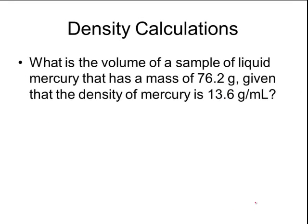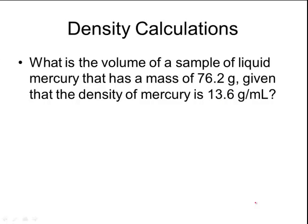Last example. What is the volume of a sample of liquid mercury that has a mass of 76.2 grams, given that the density of mercury is 13.6 grams per milliliter? Notice a little bit different unit on my density, but we'll still solve it the exact same way. So the information pulled out of the problem, mass is 76.2 grams. The density of mercury is 13.6 grams per milliliter.